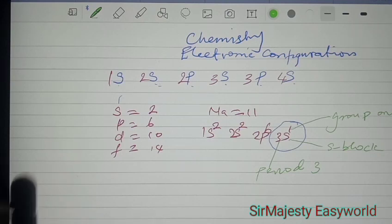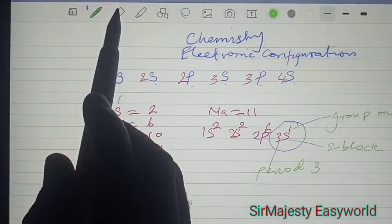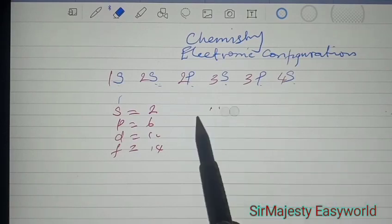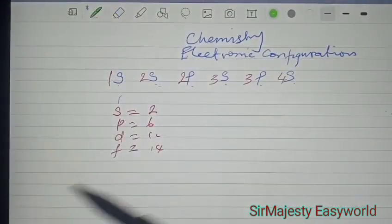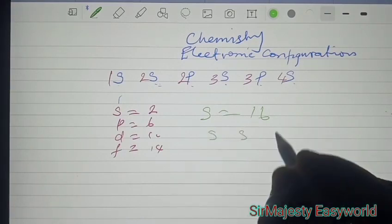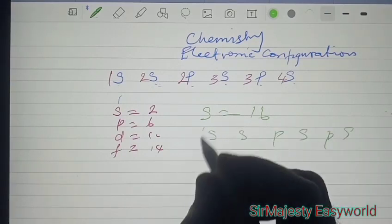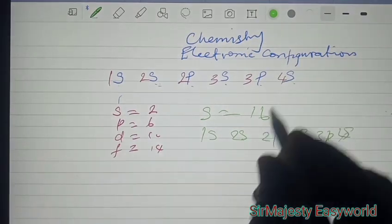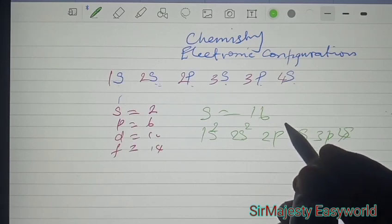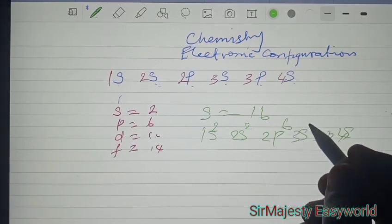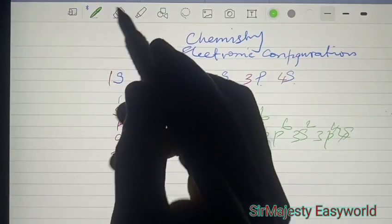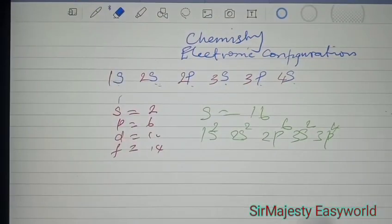But in the situation where it does not end it, let's see for sulfur. Writing the electronic configuration of sulfur, we have that S is equal to 16. Remember, we have our S, S, P, S, P, S - 1, 2, 2, 3, 3, 4. Then we put 2 here, 2 here. What remains? 6 here. Then 2 here. We have distributed. Then finally 4. And that's 16, which shows that the 4S is empty. We clean it off.